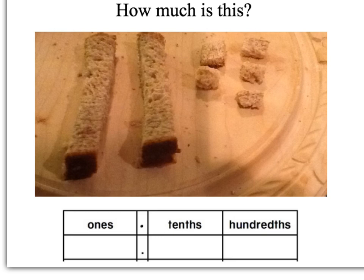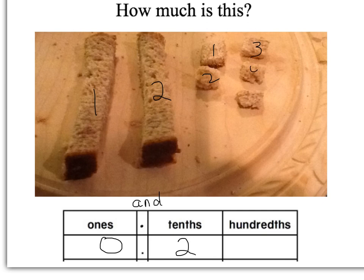Set out two of those long strips and five of the smaller ones that you've just cut. How much do you have? Do we have a whole? No, not anymore — we've cut it up. So we have zero wholes. Remember, when we see the decimal, we say the word 'and.' So we have zero and two tenths and five hundredths. So I have 25 hundredths. You say the number 25 and call it hundredths because that's where the last digit is. And we could write that as the fraction 25 hundredths.